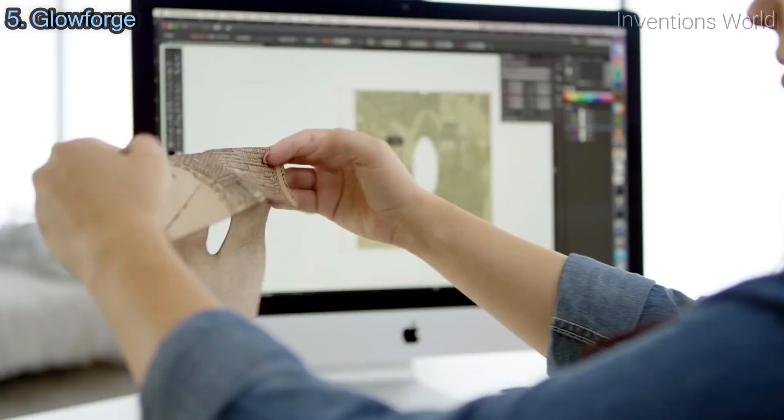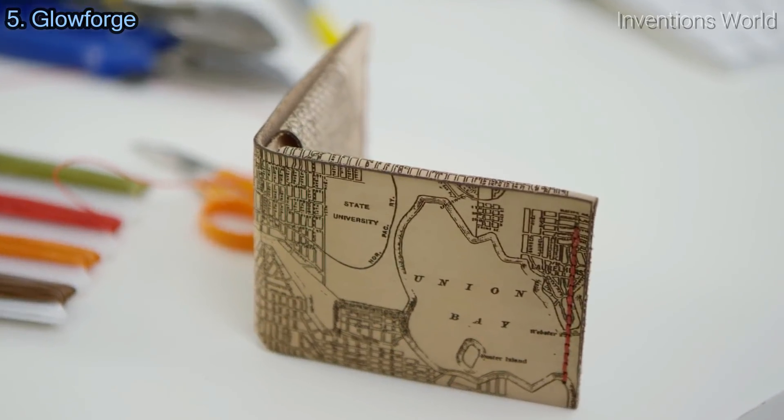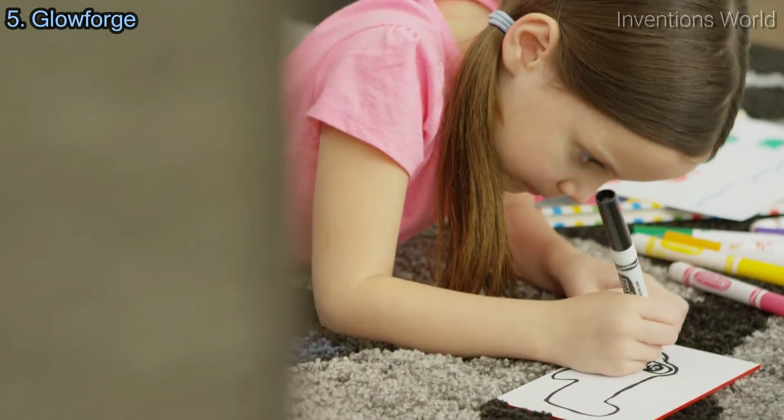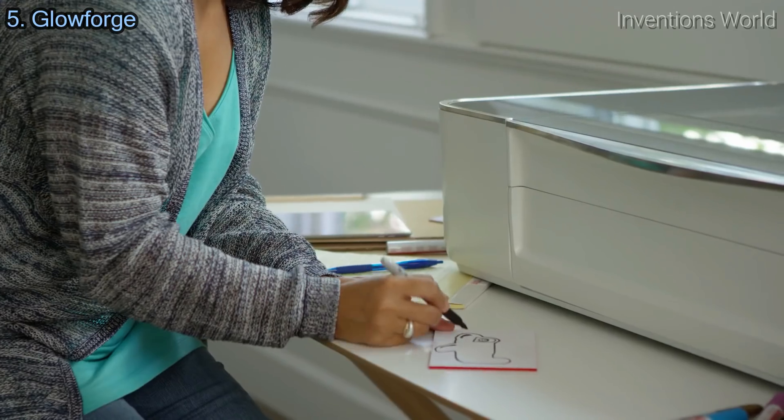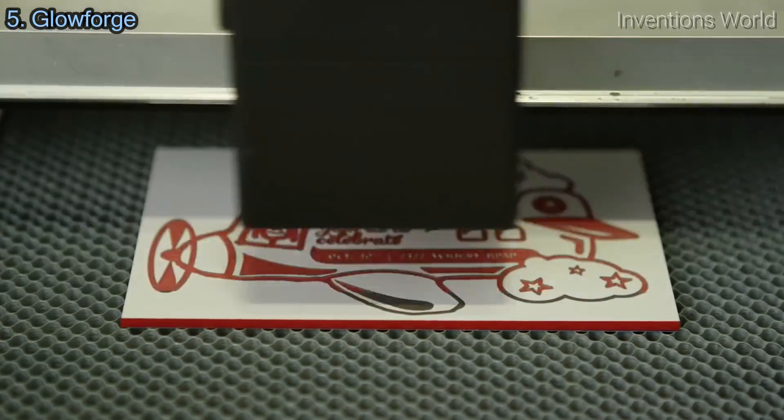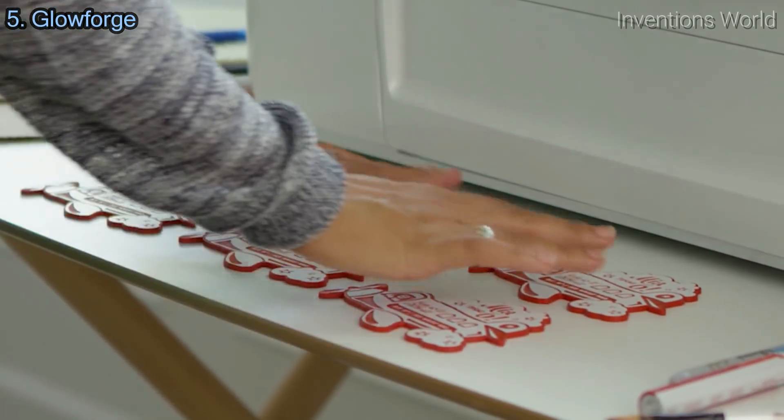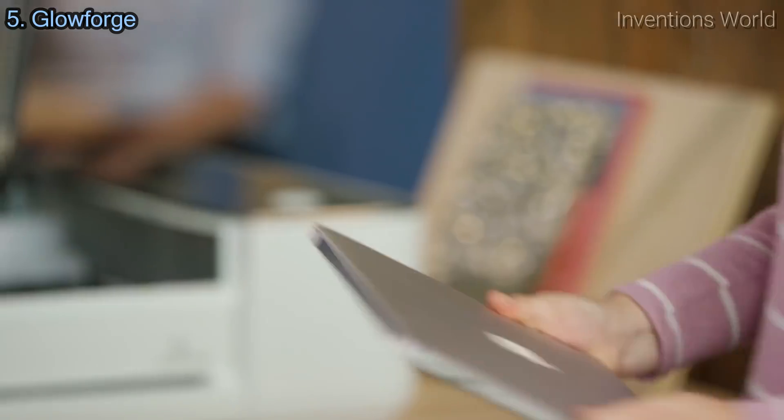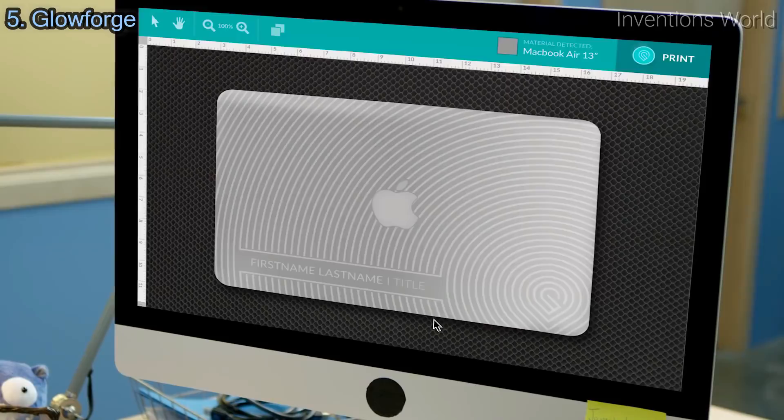Glowforge cuts holes with such precision that you can lace up leather like a shoe. If you draw in material with an ordinary pen, dual cameras create a 3D image of your material and your drawing. Glowforge will engrave and cut directly over the ink. Then, it's as easy to make a dozen copies as it is to make just one. Glowforge has autofocus that can follow curved surfaces like this MacBook. Cameras automatically identify what you put inside, so it's safe to personalize your laptop with designs from the catalog or your own photos and text.